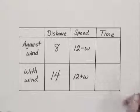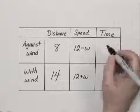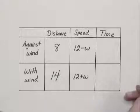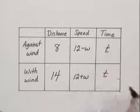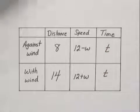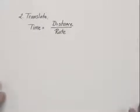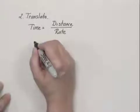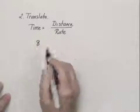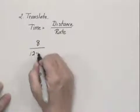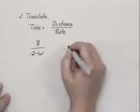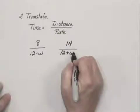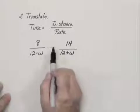The times are unknown. So we can use the formula time equals distance over rate to fill those in. When we go against the wind, the time would be the distance 8 divided by the rate or speed, 12 minus w. And with the wind, the time would be the distance 14 divided by the rate, 12 plus w. And we're told in the problem that those times are equal.